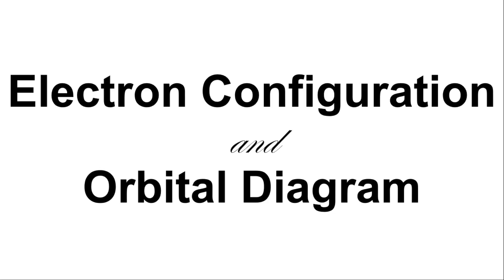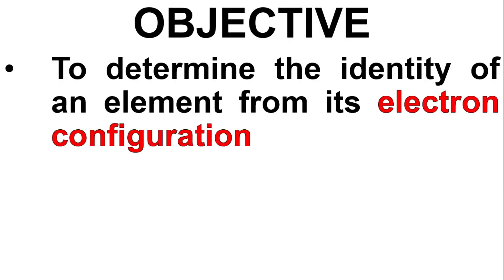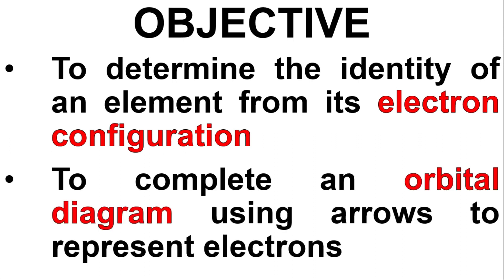In this video, we're going to talk about electron configuration and orbital diagrams. Our objective is to determine the identity of an element from its electron configuration, and to complete an orbital diagram using arrows to represent electrons.